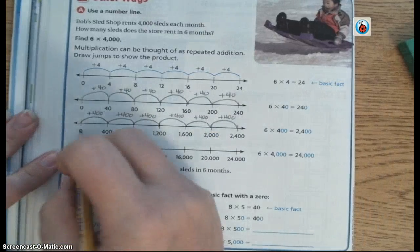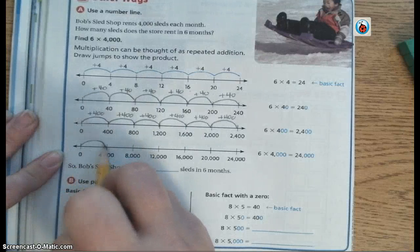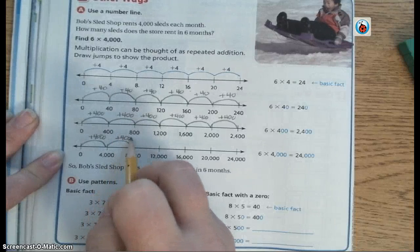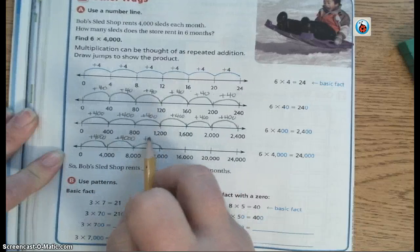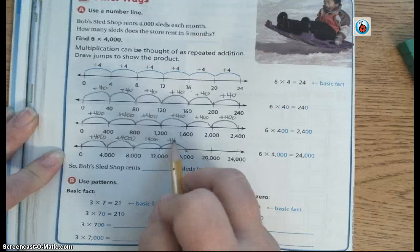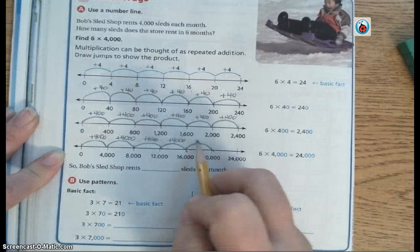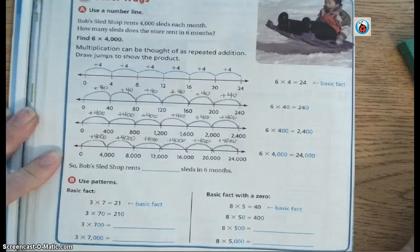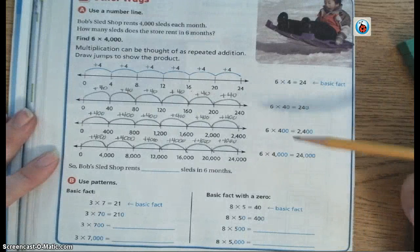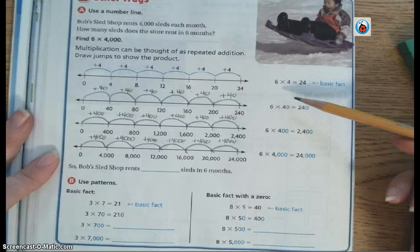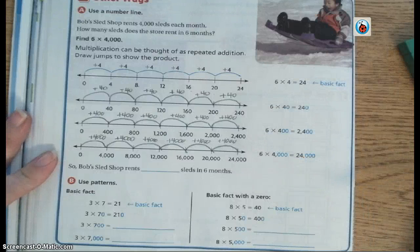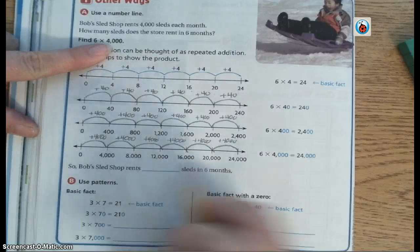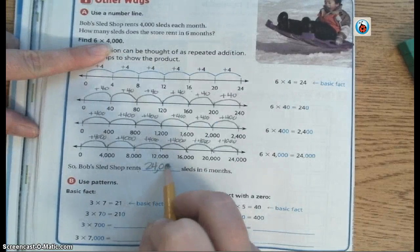The last one, I'm going to add 4,000 instead of 400 on each of my jumps. So 4,000 plus 4,000 is 8,000, 8,000 plus 4,000 is 12,000, 12,000 plus 4,000 is 16,000, 16,000 plus 4,000 is 20,000, and 20,000 plus 4,000 is 24,000. So basically what these number lines are showing you is that if you know what 6 times 4 is, then you can easily figure out what 6 times 4,000 is by following the pattern. So Bob's Sled Shop rents 6 times 4,000. He rents 24,000 sleds in 6 months.